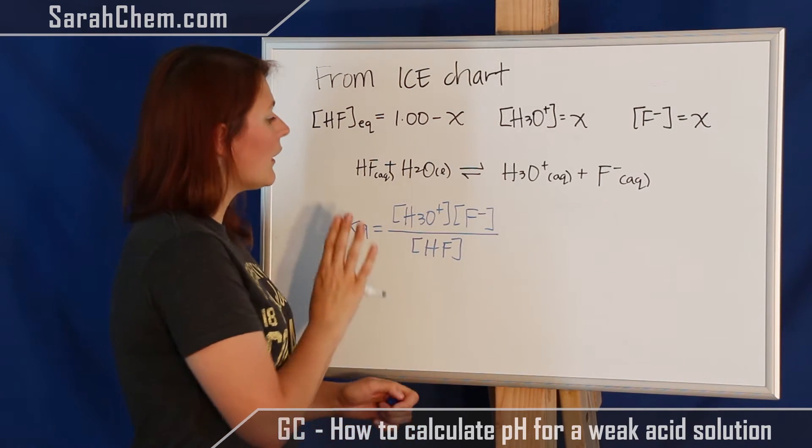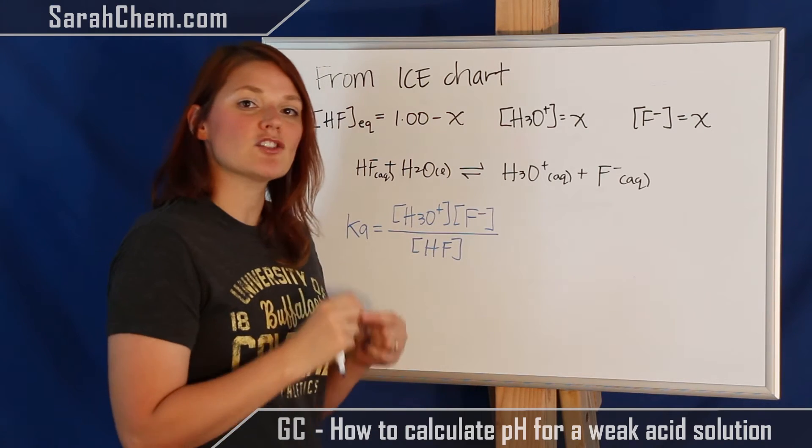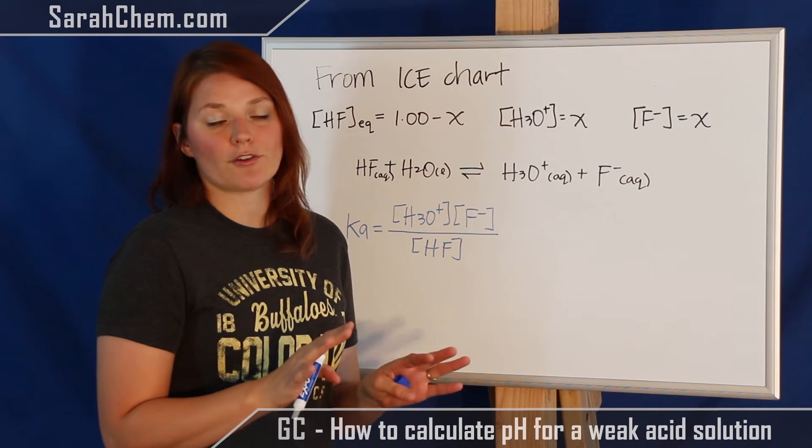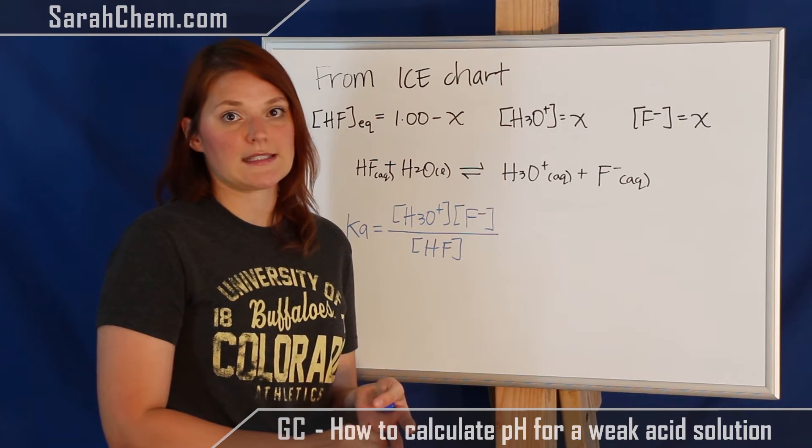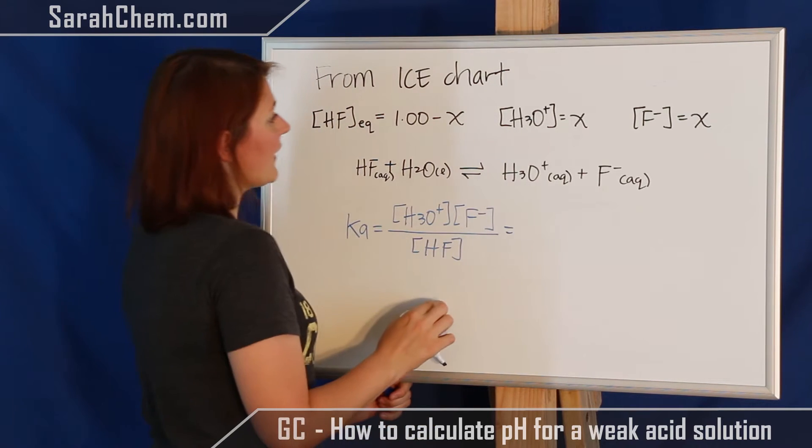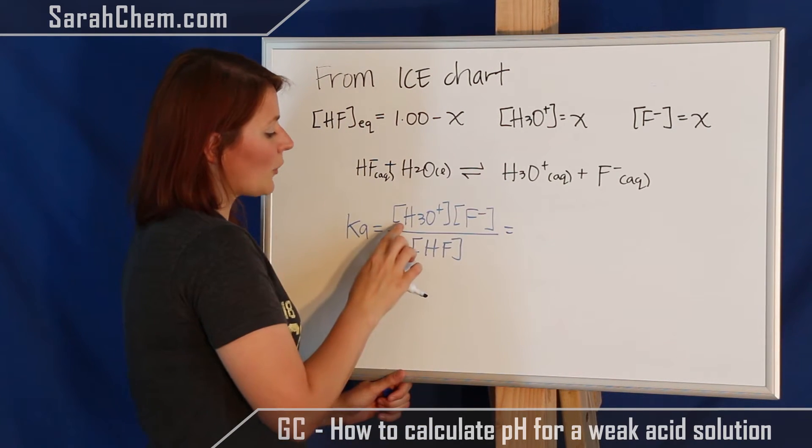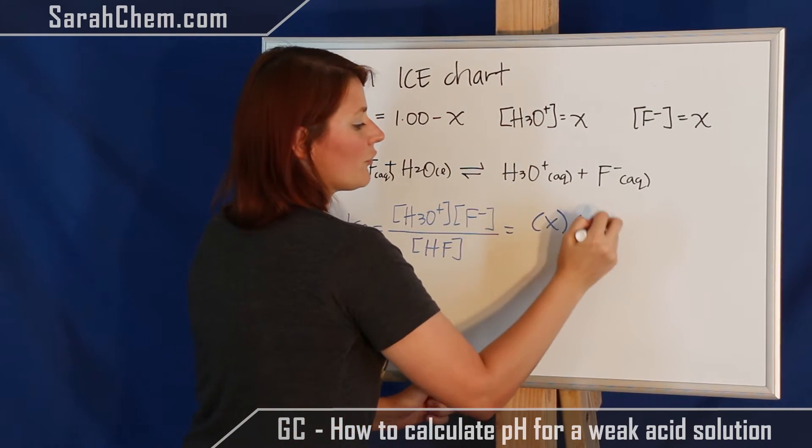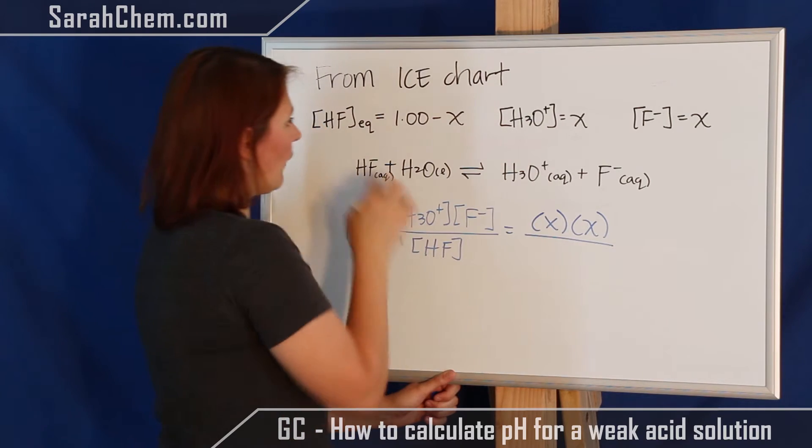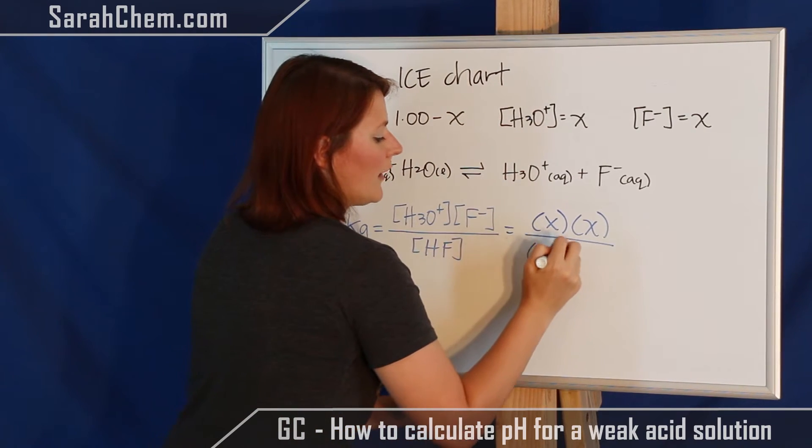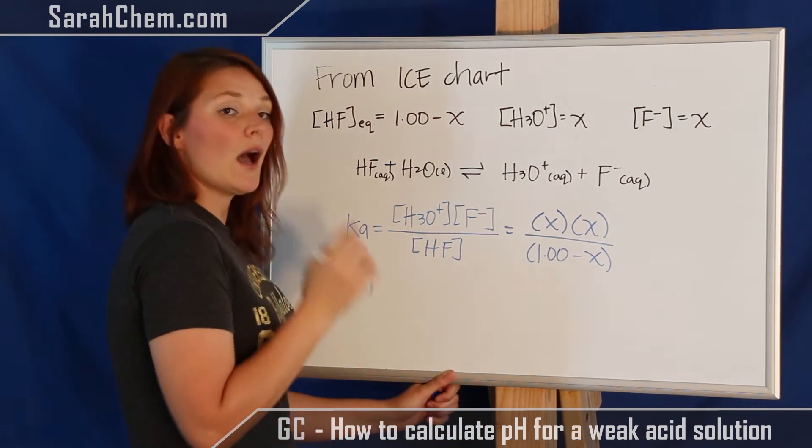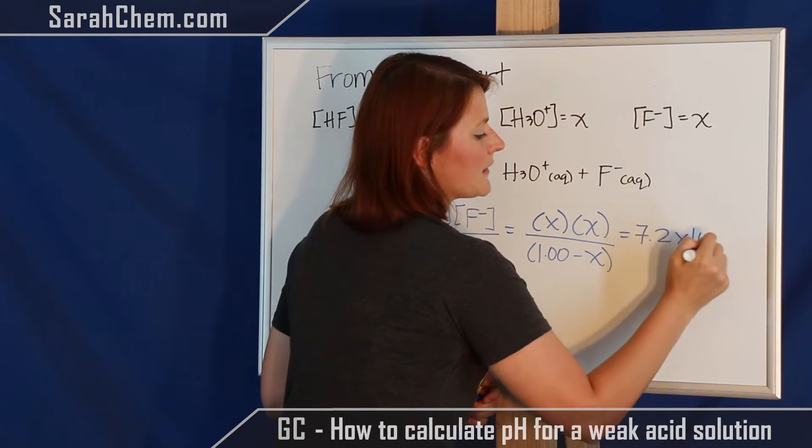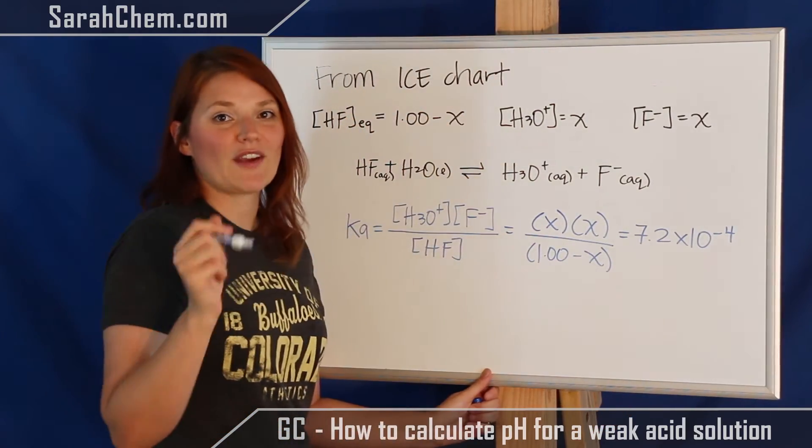And now I'm going to divide that by only the concentration of HF. I am not going to include the value of H2O because H2O is a liquid, and when we're talking about our K expressions, we never include solids and we never include liquids, only aqueous and gaseous substances. So now what I can do is plug in the information that I have up here. So I know that at equilibrium the concentration of hydronium is x, and the concentration of fluoride is x. And if I divide that now, that would be divided by the concentration at equilibrium of HF. I was also given in the question the value for the Ka, which is 7.2 times 10 to the minus 4. Now I'm ready to solve for x.